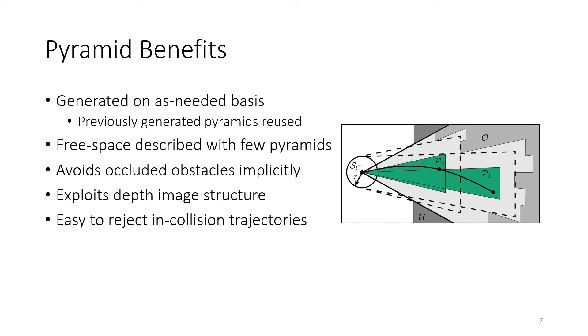Another really important reason for using rectangular pyramids is that we're able to implicitly avoid occluded obstacles. Specifically, because we're only approximating the space between the camera and the depth pixels, we're automatically able to avoid any obstacles that we can't see. This is contrasted with other methods that consider each pixel in the depth image as an individual obstacle which isn't able to properly account for obstacles that might not be seen by the camera.